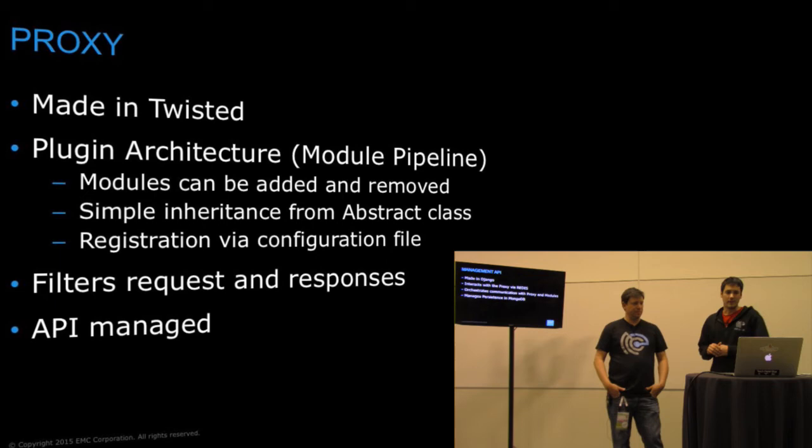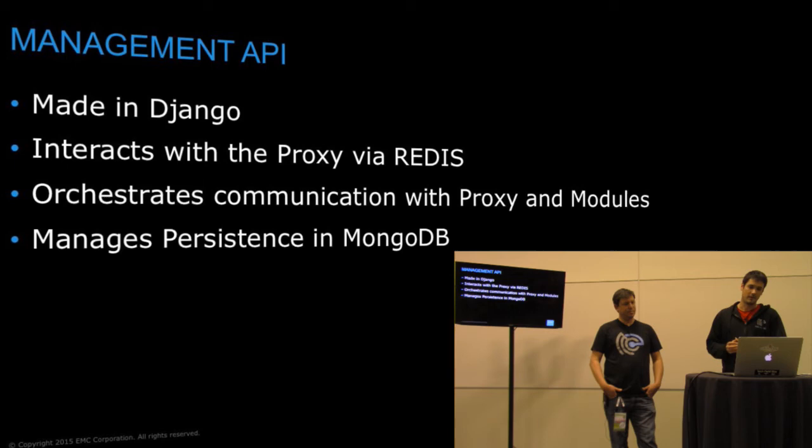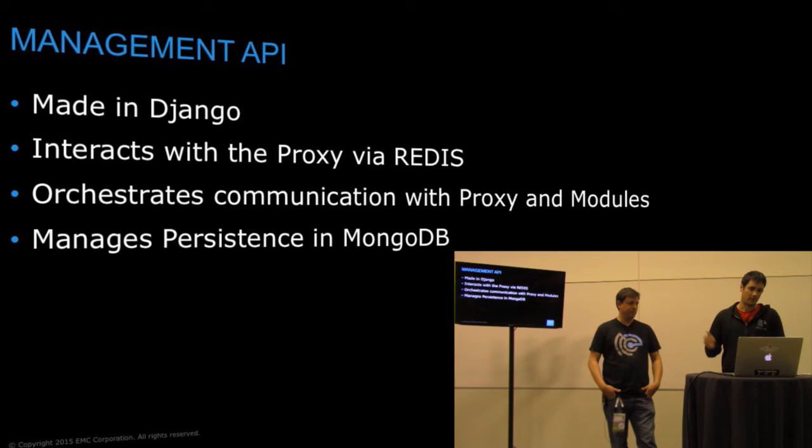The Management API is written in Django, exposing a bunch of different resources to create test plans, run sessions, stop them, and all different kinds of resources exposed via the API. The API interacts via Redis with the proxy, and also works as an orchestration engine to tell the proxy and the modules how to behave. For persistence, we are using MongoDB.